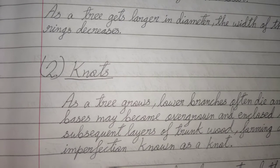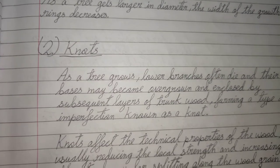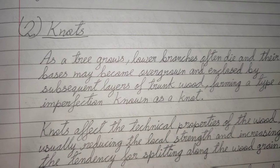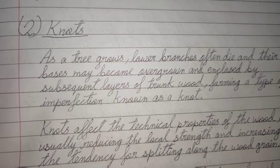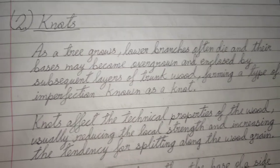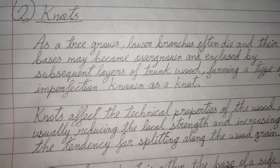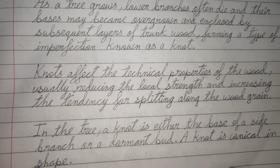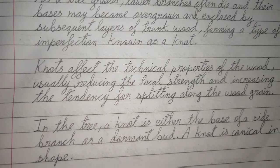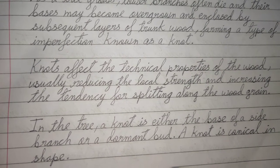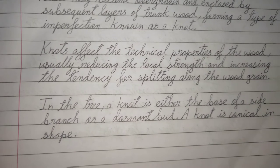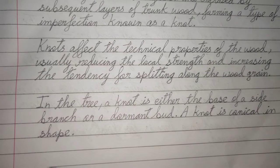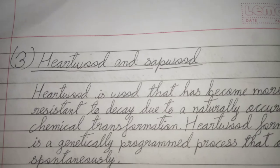As a tree grows, lower branches often die and their bases become overgrown and enclosed by subsequent layers of trunk wood, forming a type of imperfection known as a knot. Knots affect the technical properties of the wood, usually reducing the local strength and increasing the tendency for splitting along the wood grain. In the tree, a knot is either the base of a side branch or a dormant bud. A knot is conical in shape.